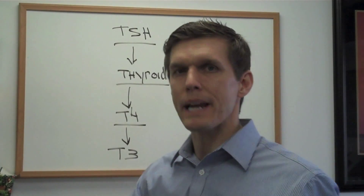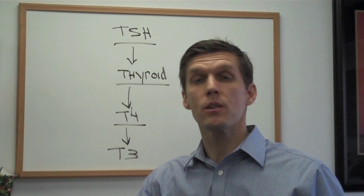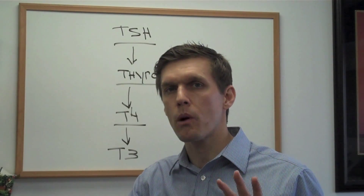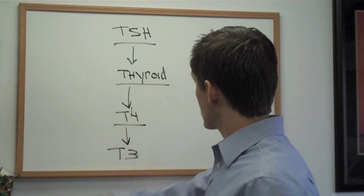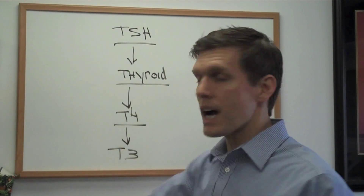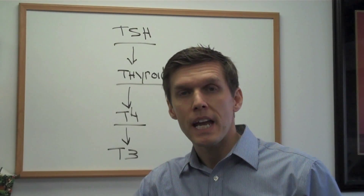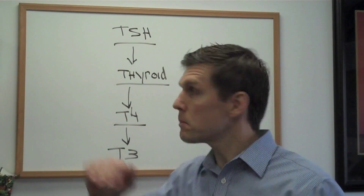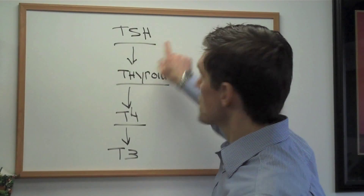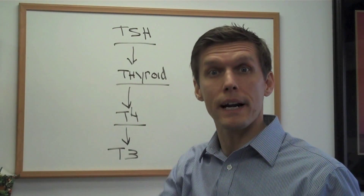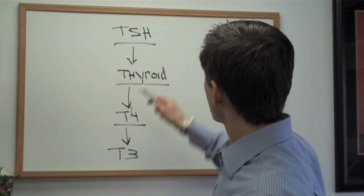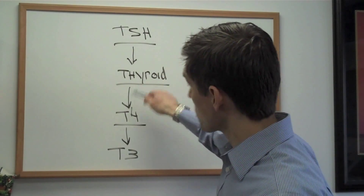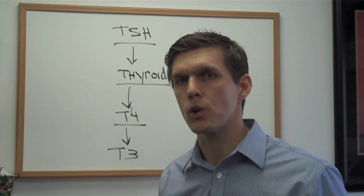How does the body know when to make more? There's another part of the brain called the hypothalamus, and the hypothalamus is the part that actually reads how much T4 — thyroxin — is in the bloodstream. When thyroid hormone goes down in the bloodstream, TSH goes up to tell the thyroid to release more T4.